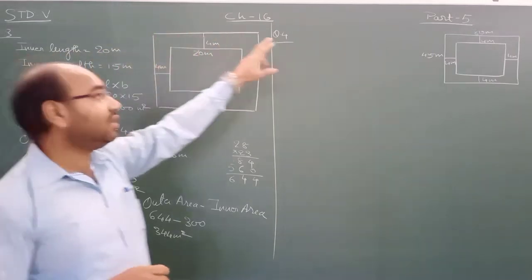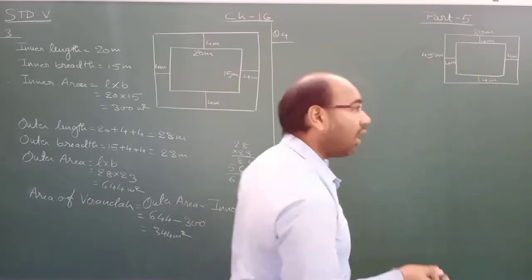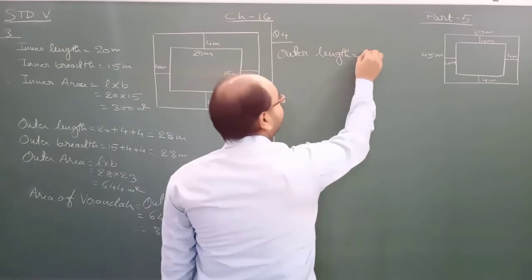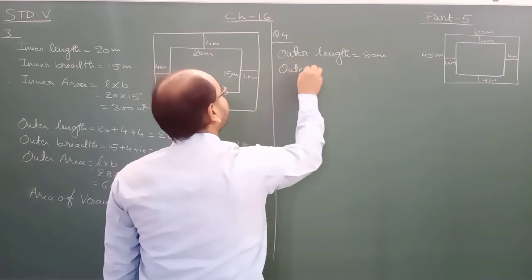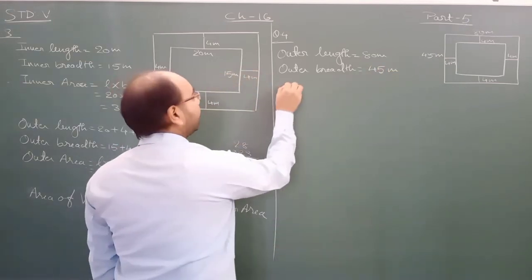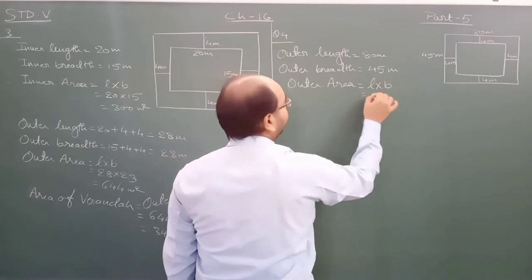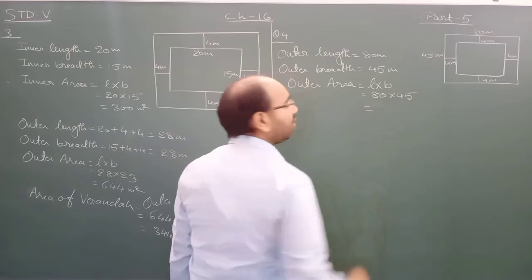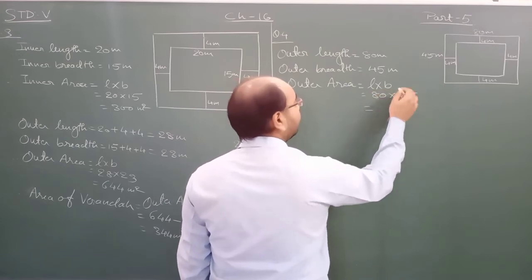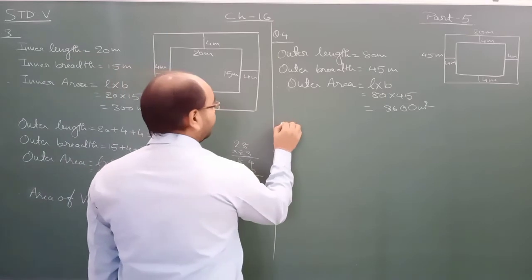Here we are starting from the outer measurement. So we write: outer length is equal to 80 meter, outer breadth is equal to 45 meter. Therefore, outer area is equal to 80 into 45, which equals 3600 meter square. That is our outer area.